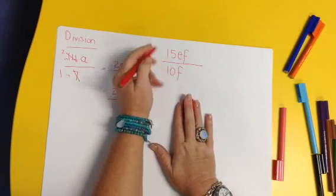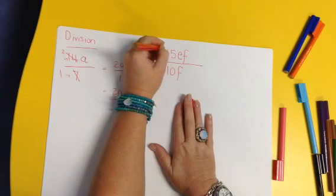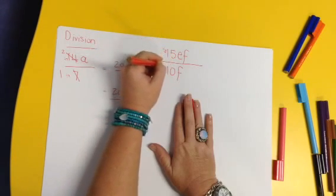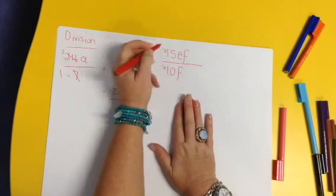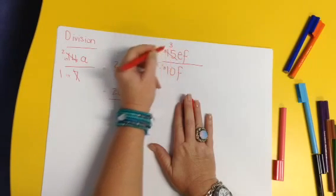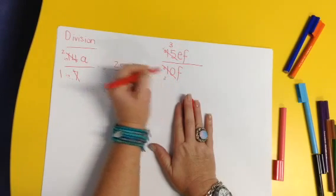Okay, so first we look at our numbers. What can go into 15 and 10? 5 can. So we divide by 5, divide by 5. So 15 divided by 5 would give us 3, and 10 divided by 5 would give us 2.